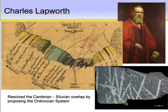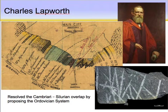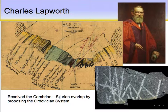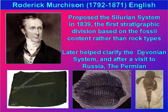The dispute wasn't resolved until about 1879, when Charles Lapworth came along and defined the Ordovician System. Lapworth noticed that there were unique fossils in the Cambrian and very different ones in the Silurian, and in between — in the overlap zone — there were other unique fossils that could be separated out. He named this the Ordovician System. So the first three systems of the Paleozoic Era, from oldest to youngest, are the Cambrian, the Ordovician, and the Silurian, followed by the Devonian, which both Murchison and Sedgwick described together.